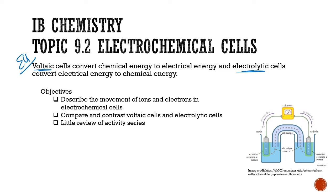Our objectives are: we are going to describe the movement of ions and electrons in electrochemical cells, compare and contrast voltaic cells and electrolytic cells, and end with a brief review of the activity series.